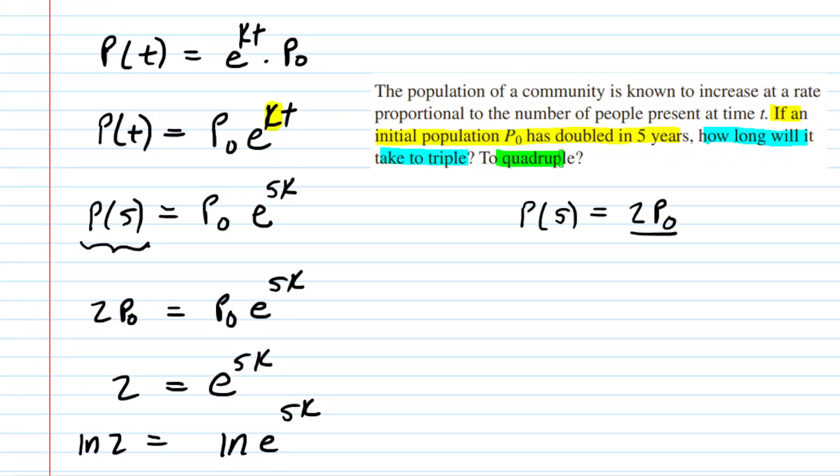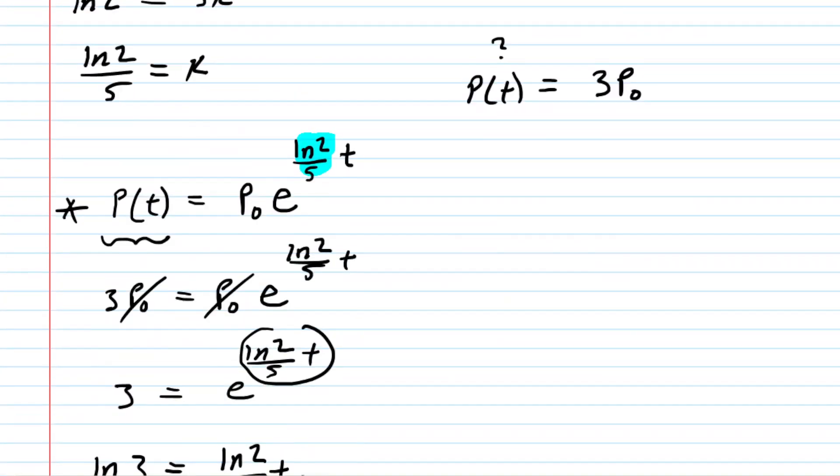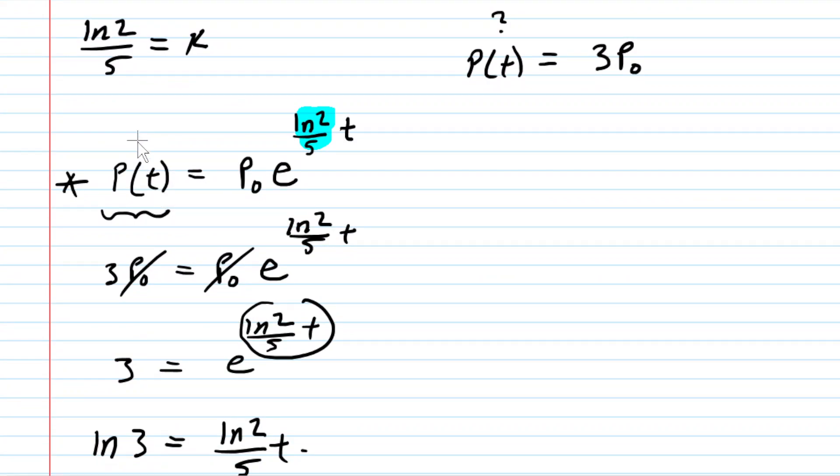We just want to quadruple the population. So quadrupling the population would mean that P(t) is equal to 4 times P₀. So we're going to walk through the same process again. Let's grab our solution to our differential equation.